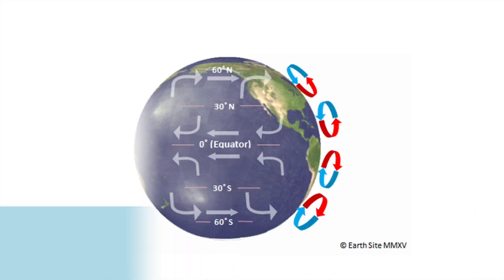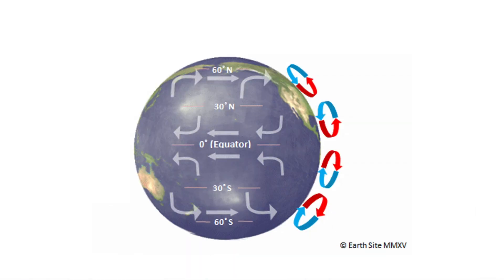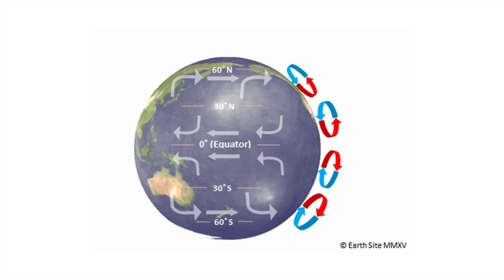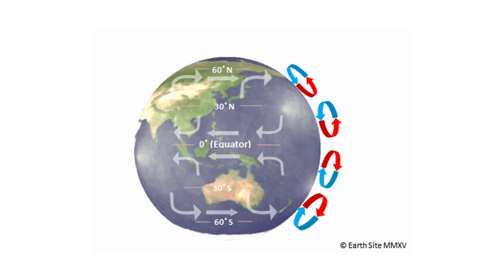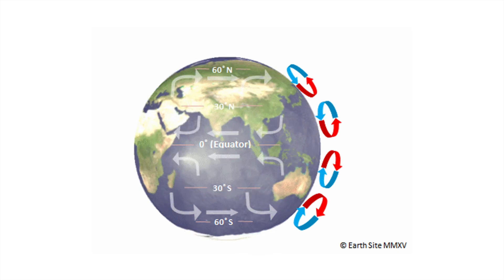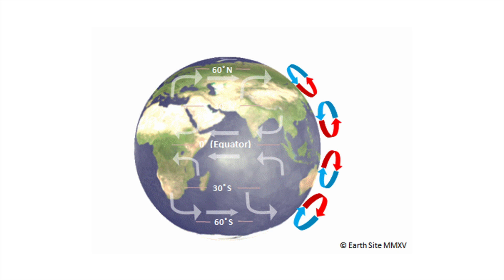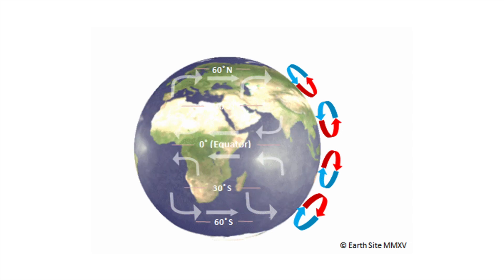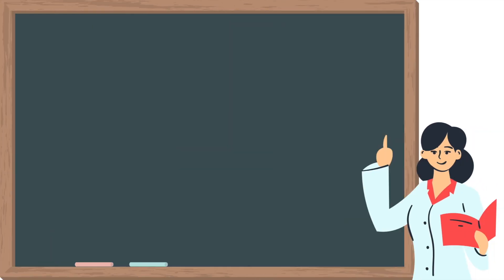If the wind driving the current suddenly stops, the water will continue moving at its velocity due to its momentum. Apart from the equator, Coriolis acceleration is non-zero and acts at right angles to the motion. This gives rise to a circular motion with a constant velocity. We can derive this simply.